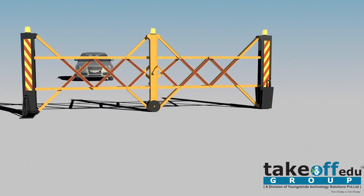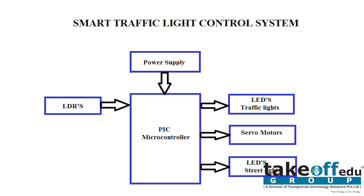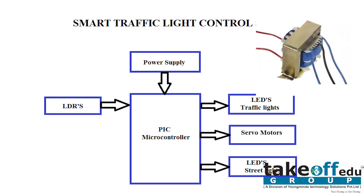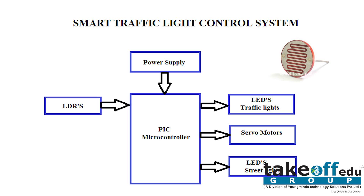Before explaining or entering the project, let's see the block diagram. In this circuit, we are using a transformer for the power supply, which is used to give power to the microcontroller and subsystems. Here we are using a PIC microcontroller for programming the streetlights, and we are using an LDR circuit.